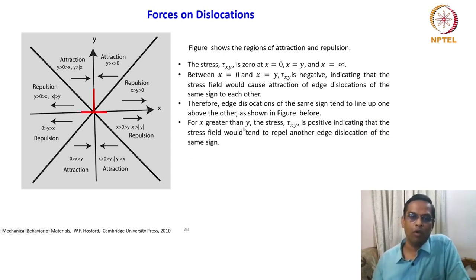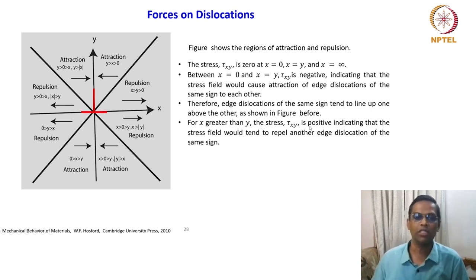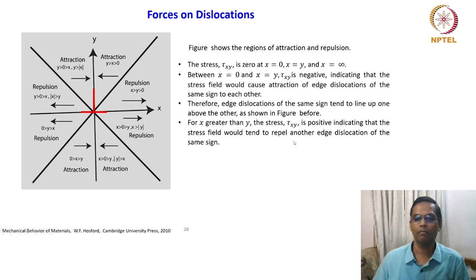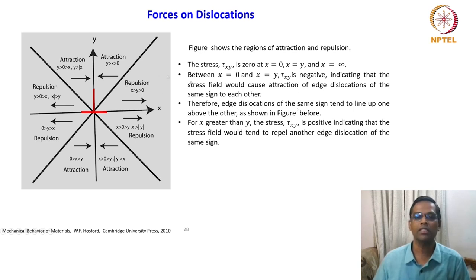For X > Y, the stress tau_XY is positive, indicating that the stress field would tend to repel another edge dislocation of the same sign — opposite to the previous case. So within the quadrant you have attraction in one region and repulsion in another. If you compare that diagram with this one side by side, it will connect what the symbols indicate and how the attractive and repulsive forces correspond, which will make things much clearer.